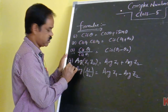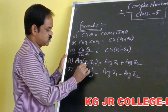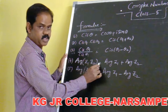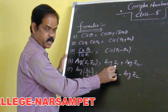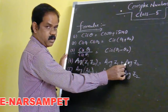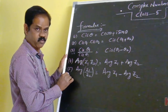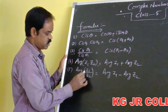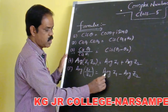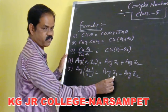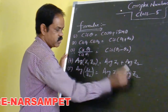The fourth formula is: the argument of Z1 into Z2 is equal to argument of Z1 plus argument of Z2. The fifth formula is: the argument of Z1 by Z2 is equal to argument of Z1 minus argument of Z2.